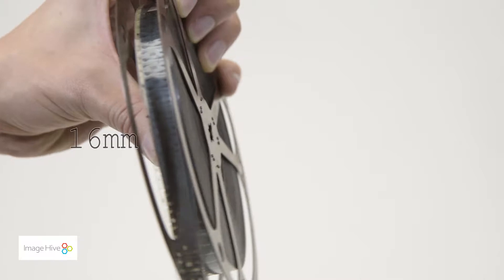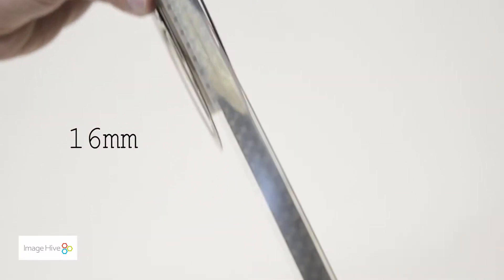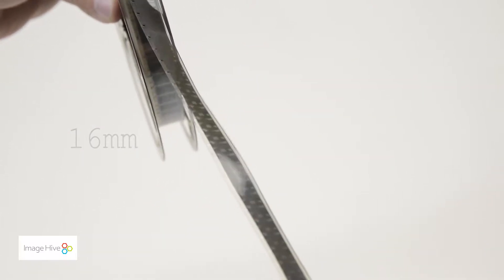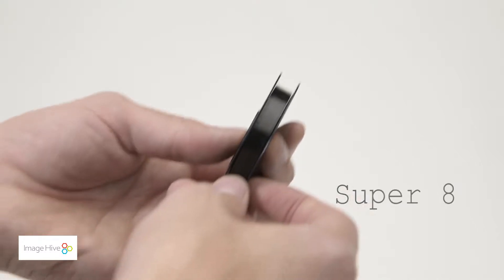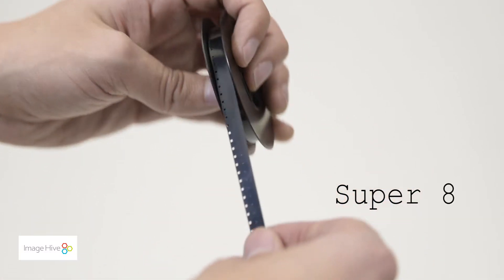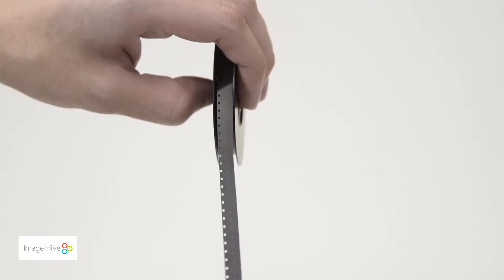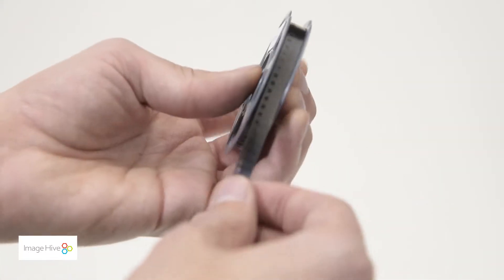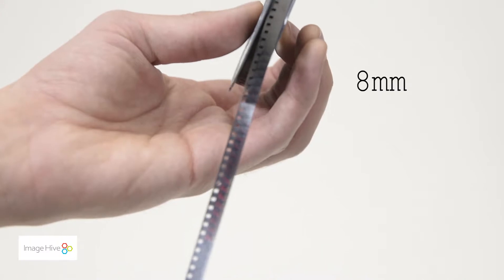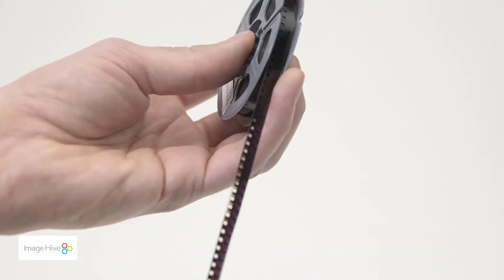As you can see, 16mm has larger frames than the Super 8 film, while the Super 8 film has larger frames than the 8mm, with larger perforations at different intervals on the side. These larger frames mean that the 16mm will have a higher quality of video than the Super 8, while the Super 8 will have a better quality than the 8mm.